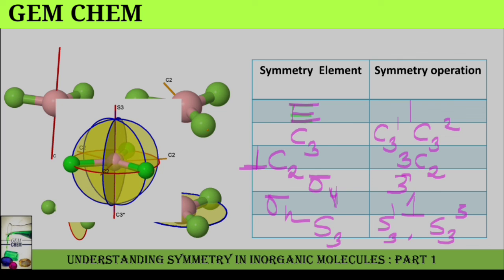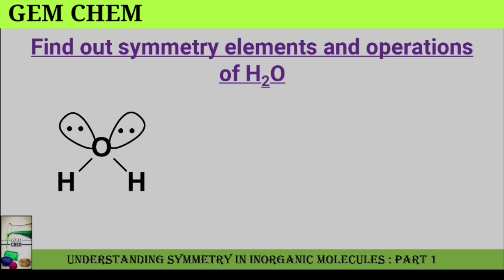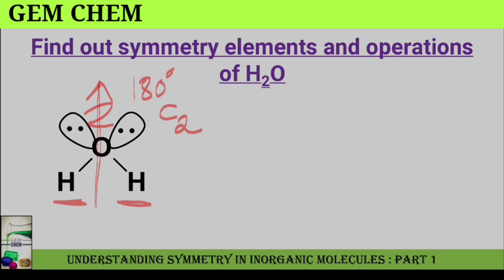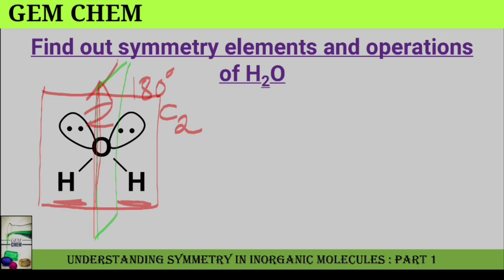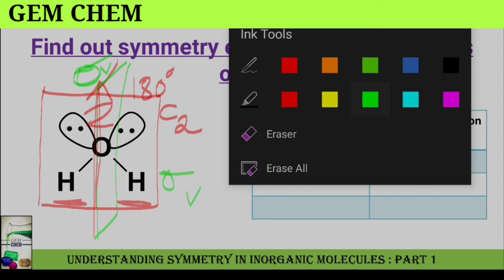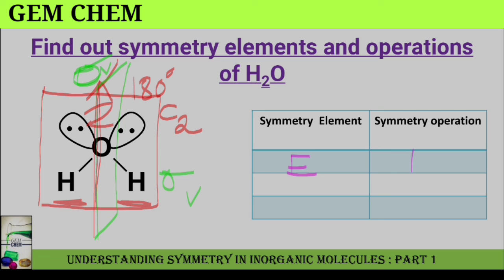The last molecule for today is water. Water has a C2 axis passing through the oxygen. Rotating by 180 degrees changes the positions of the hydrogens but the molecule looks the same. There is a sigma V in the molecular plane and another sigma V passing between the two hydrogens, giving two sigma V planes. The symmetry elements and operations for water are: E (one operation), C2 (one operation), and two sigma V planes.